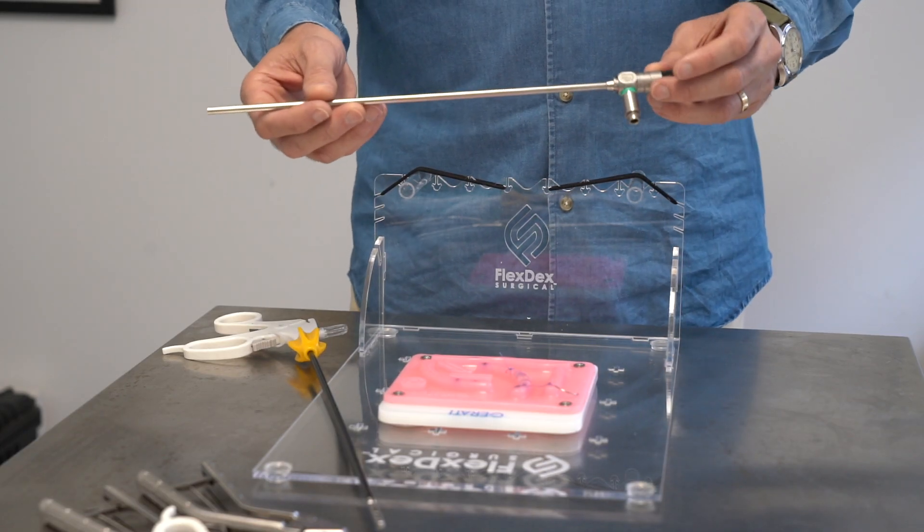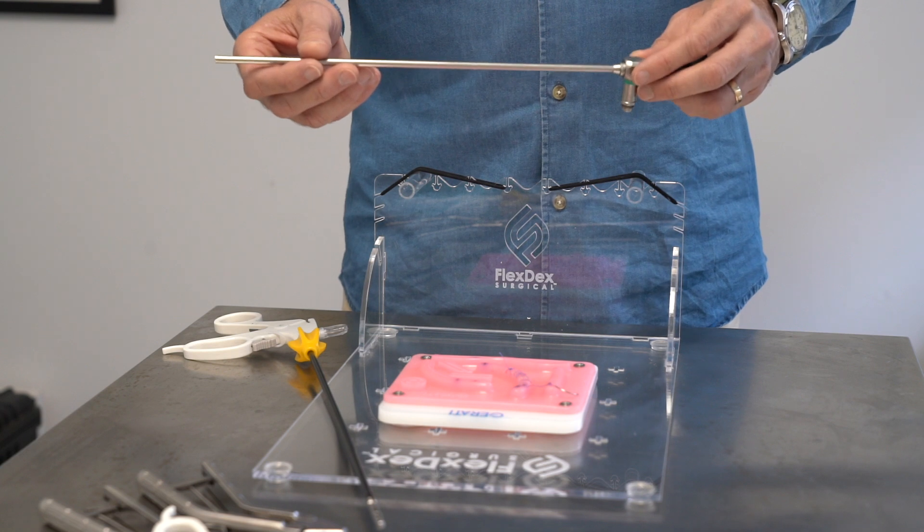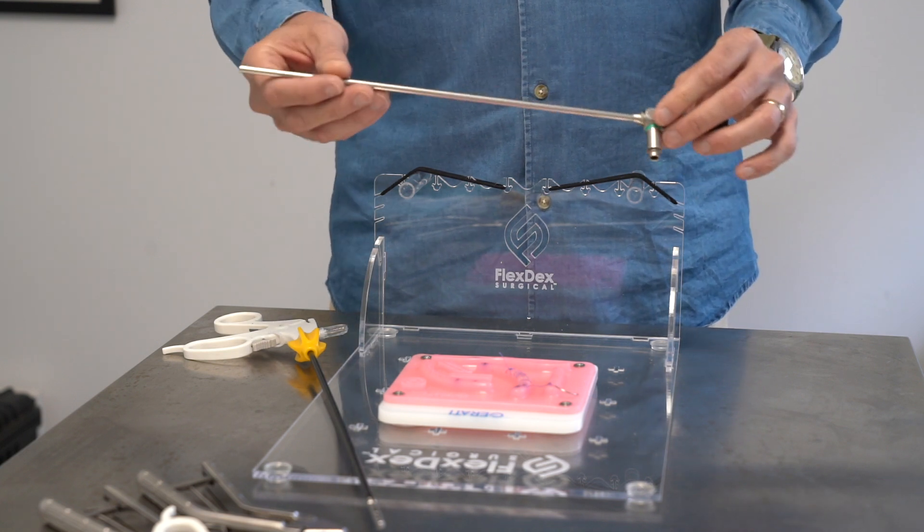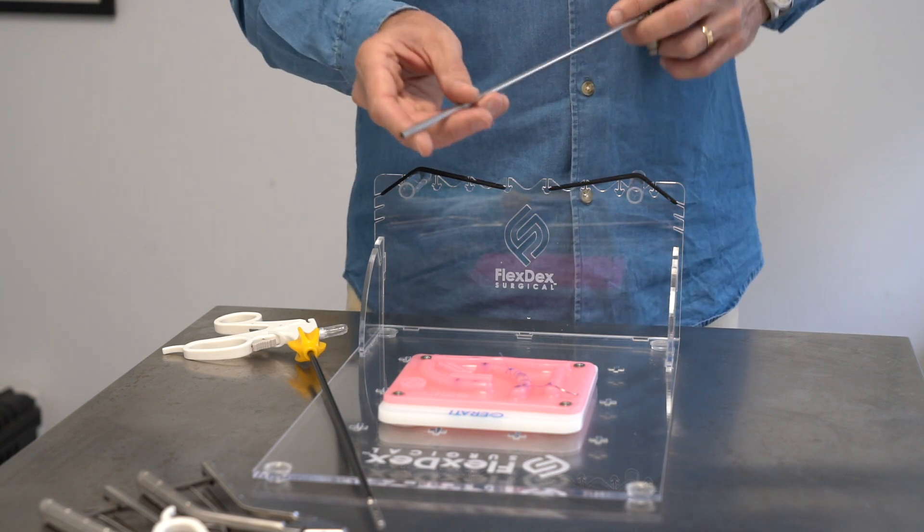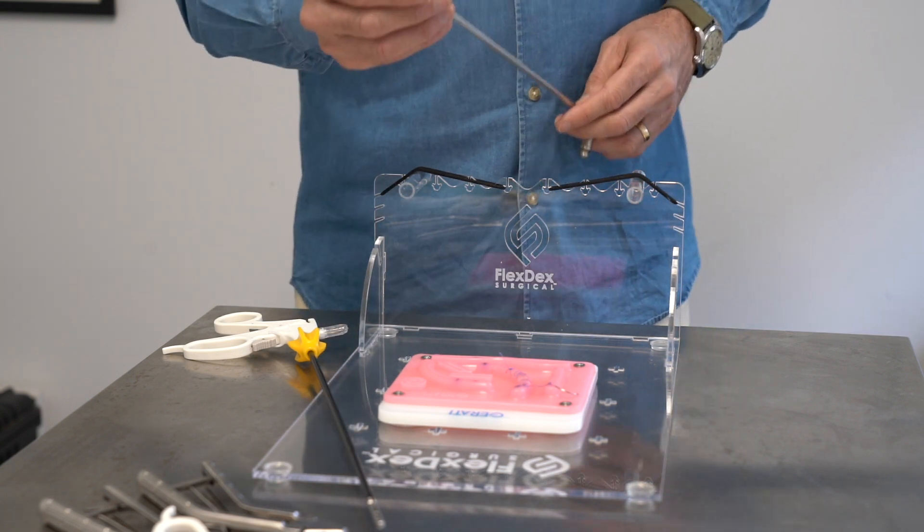This is the laparoscopic telescope. They come in numerous different sizes. This is a 5.0 millimeter laparoscope with a zero degree offset, which means that whatever the scope is pointing at is exactly what you see in the camera.